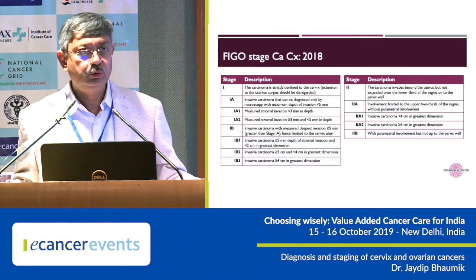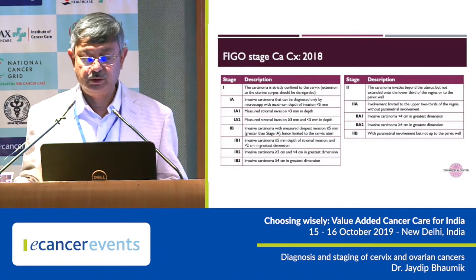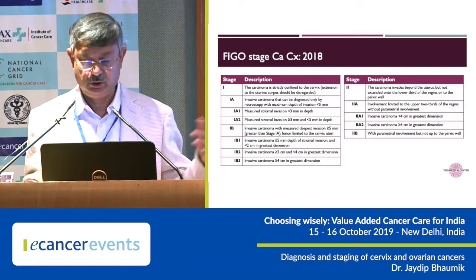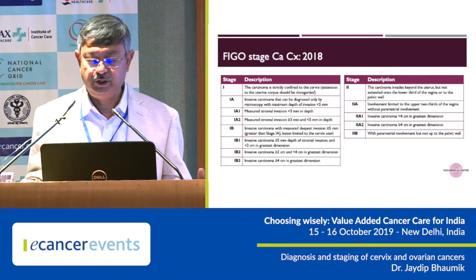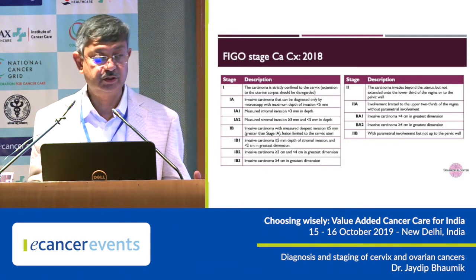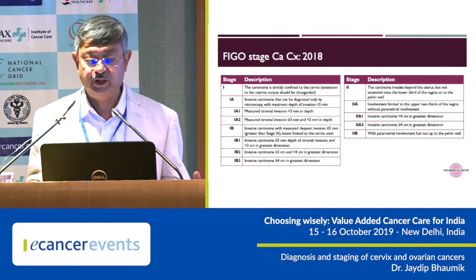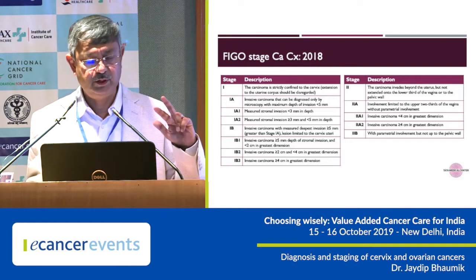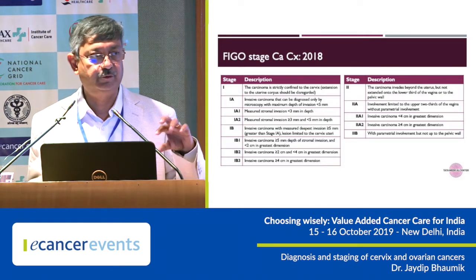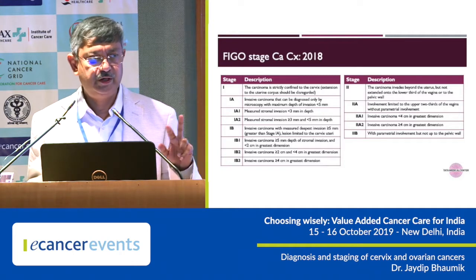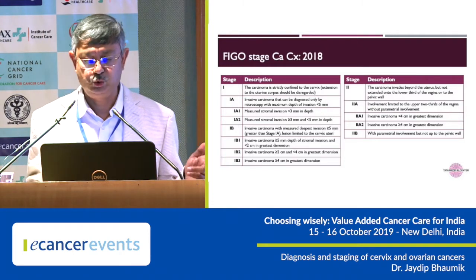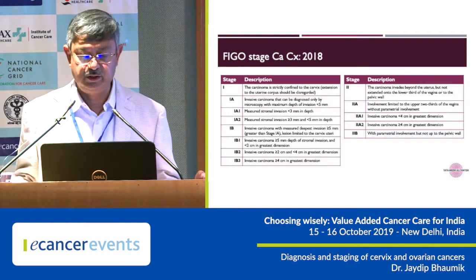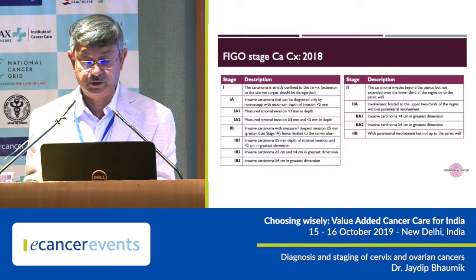Stage 2 remains almost the same. Stage 2 is disease gone beyond the cervix but without any distant spread. If it has involved the upper part of the vagina then it is Stage 2A, and if it has involved the parametrium then it is Stage 2B. Stage 2A is again subclassified as 2A1 and 2A2 depending on the size of the tumor: less than 4 cm is 2A1, and more than 4 cm is 2A2.